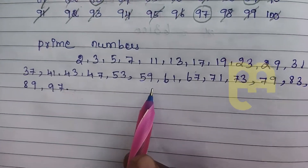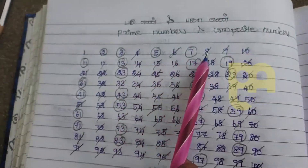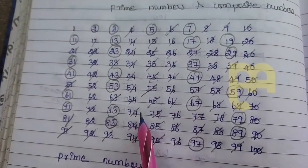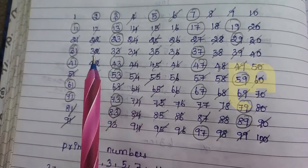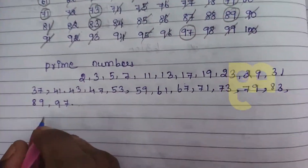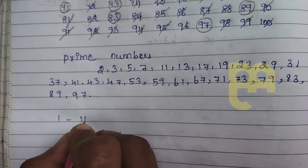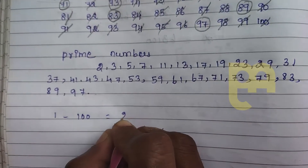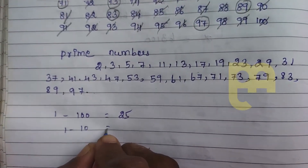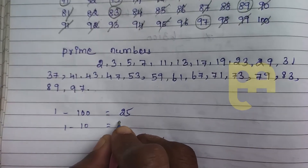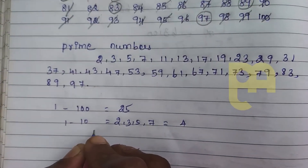If you add numbers in 4, you can add numbers. If you add 1 prime number, you can add a composite number. If you add 1 to 100, you can add 20. If you add 1 to 10, you can add 2, 3, 5, 7 — and 4. If you add 1 to 10, you can add 4.